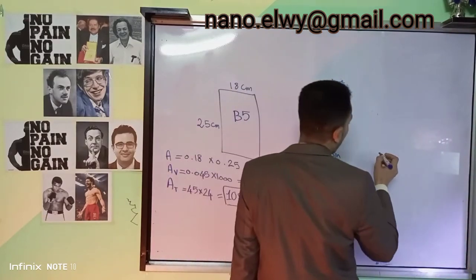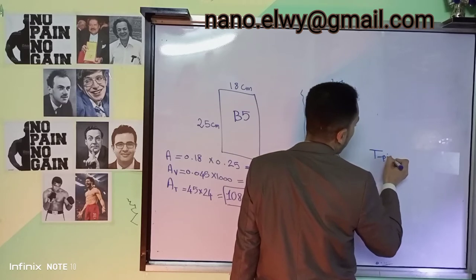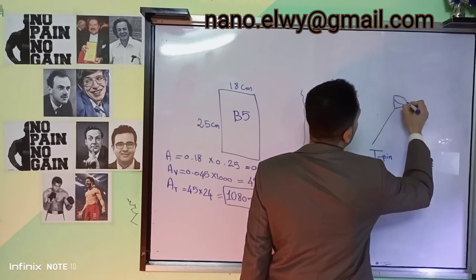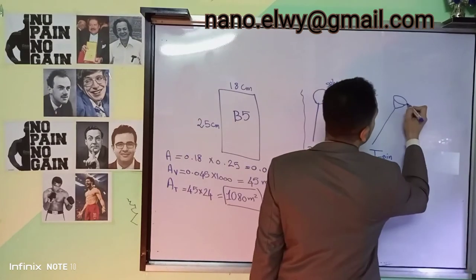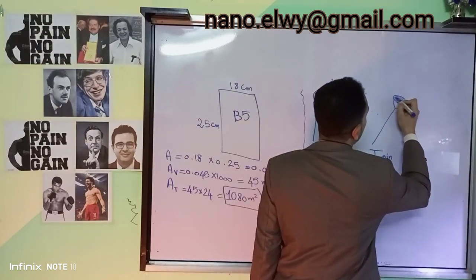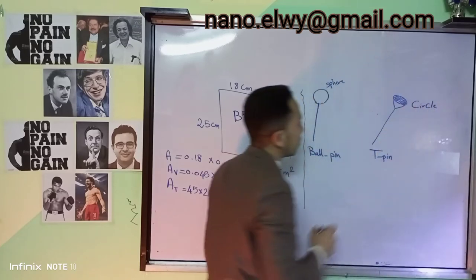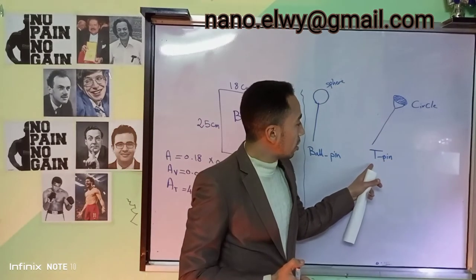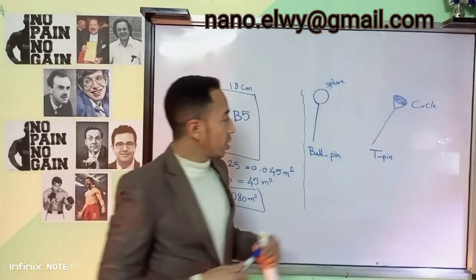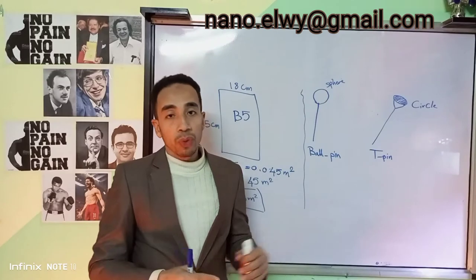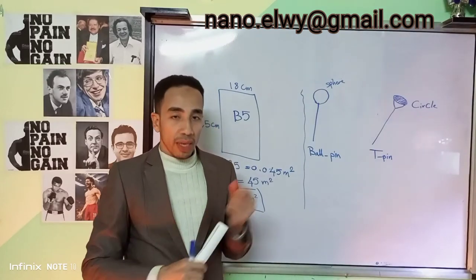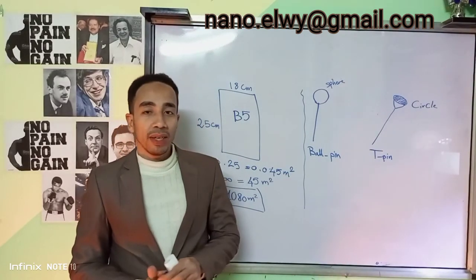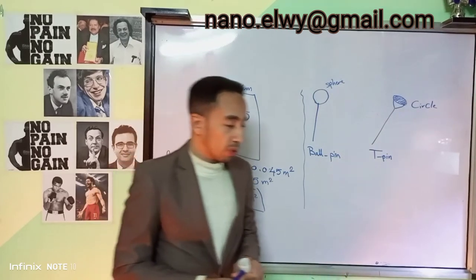The head of the pin takes a circular shape, so the area of the head of the pin is a circle. In this argument, we shall calculate using the T-pin type. You can apply the same analysis and same calculations to the ball pin type and put your answer in the comments below.